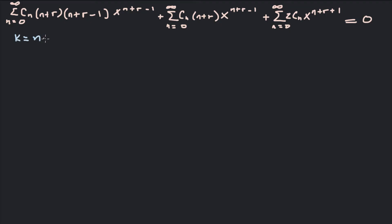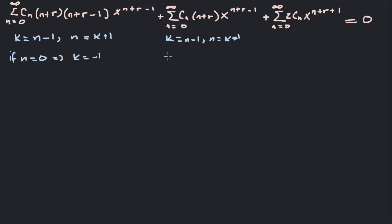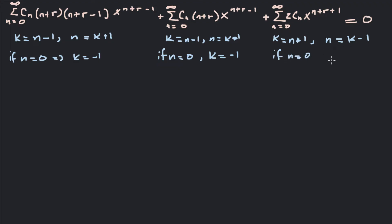To re-index the first sum, we let k equal n minus 1, which means n equals k plus 1. Based on this substitution, if n equals 0, then k equals negative 1. The same substitution applies to the middle series: let k equal n minus 1, so n equals k plus 1, and if n equals 0, k equals negative 1. The upper bound stays infinity. For the last series, we let k equal n plus 1, so n equals k minus 1, and if n equals 0, then k equals 1.